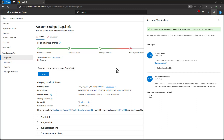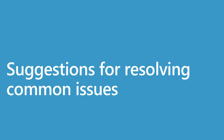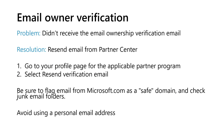Next, we cover common account verification issues. The primary contact email address must be a work account that is monitored and can send and receive email. Do not use a personal email address not associated with the company domain, and avoid using a tenant user credential not associated with email. If you don't receive the email ownership verification email within one business day, you can ask to have it resent by going to your profile page for MPN, CSP, or developer and selecting resend verification email.